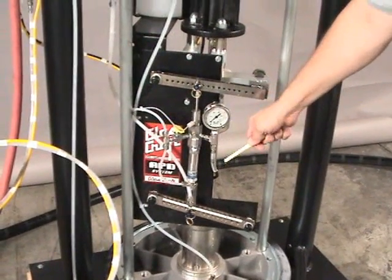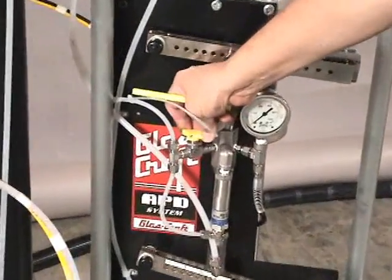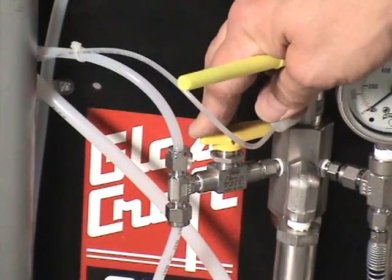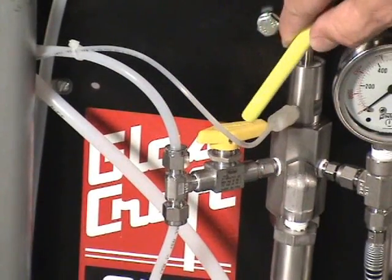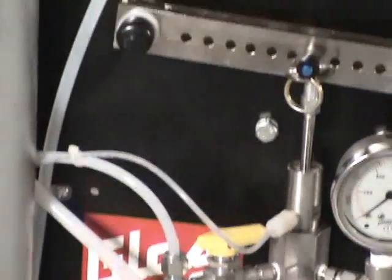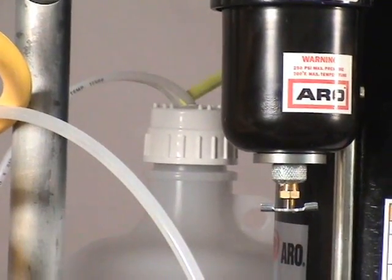This is our catalyst pump. We want to turn the catalyst ball valve, which is a yellow-handled ball valve, to the recirculation position. The catalyst will exit this tube and come all the way back into the supply container.